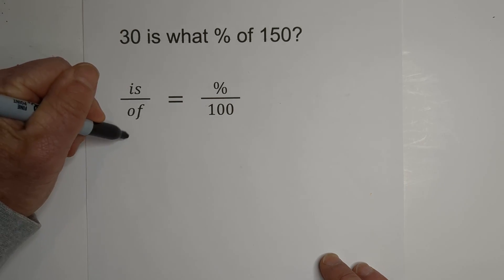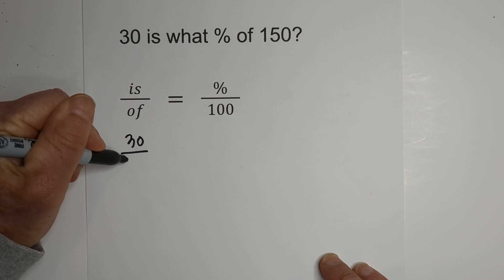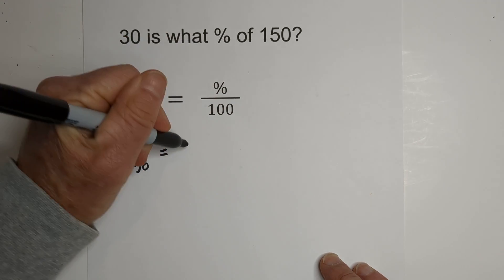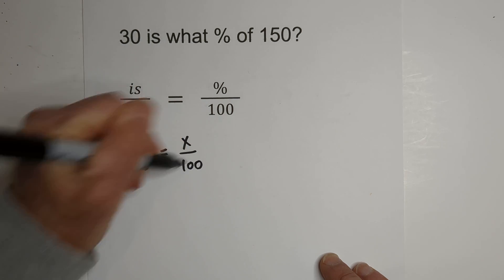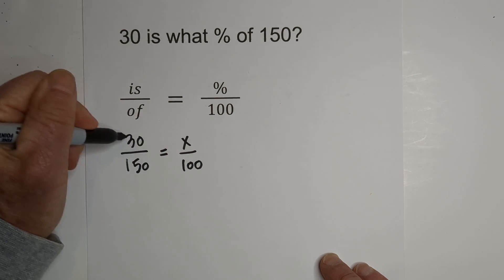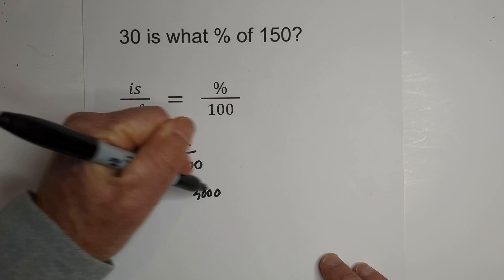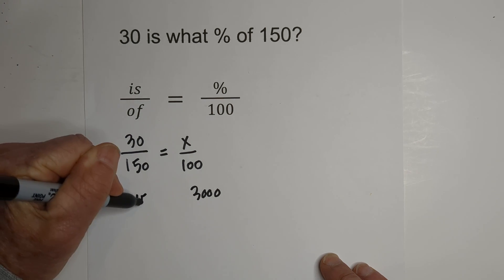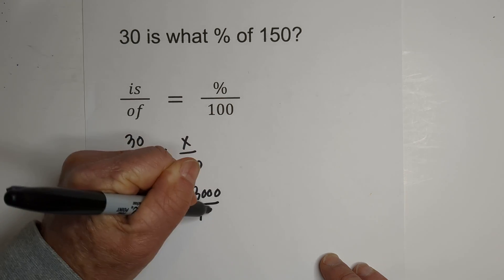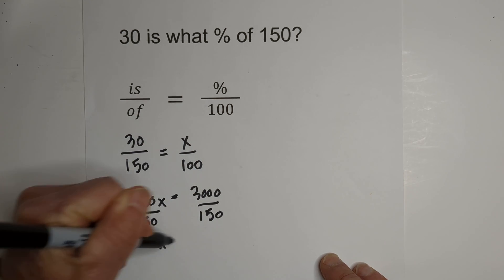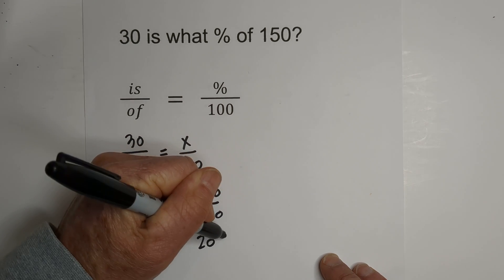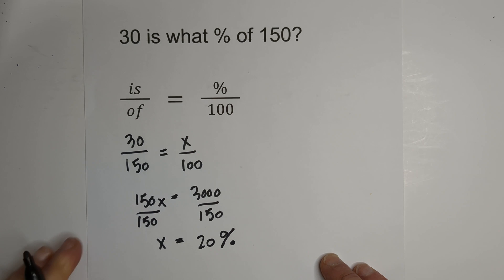30 is the is. Of is 150 equals we're looking for what percent, so that will be the x and then we place it over 100. 30 times 100 is 3000 and x times 150 is 150x. Divide through by 150, so x equals 20 and it's going to be 20 percent.